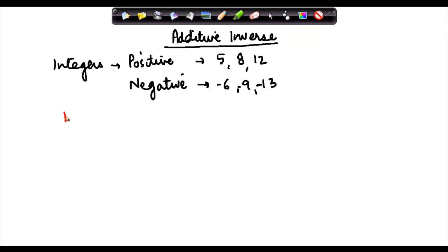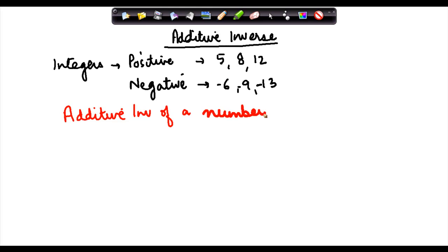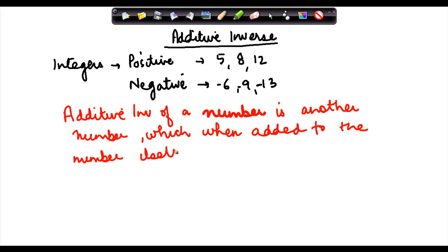Additive Inverse of a number is another number which when added to the number itself gives the sum as zero.